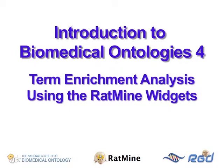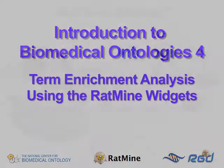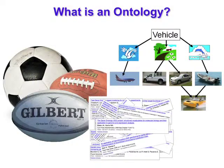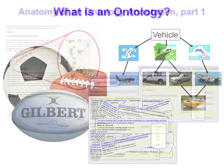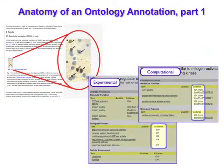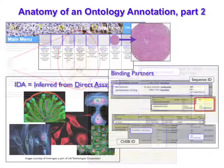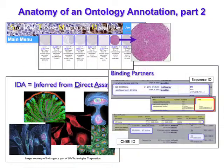This video is the fourth in a series on biomedical ontologies. In the previous videos, we introduced what an ontology is, talked about where ontology annotations come from and where they can be found, and looked in detail at the various components of ontology annotations and the valuable information those components contain.